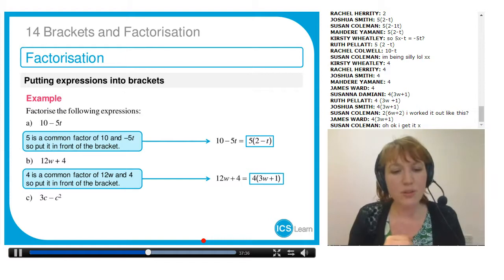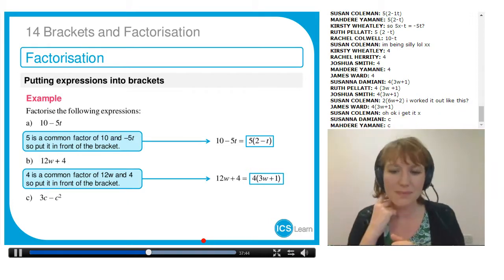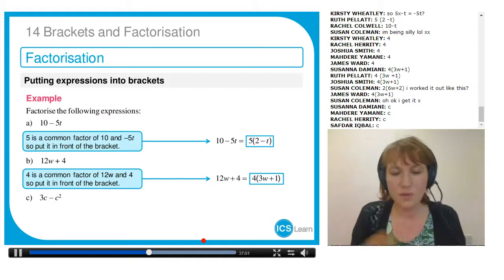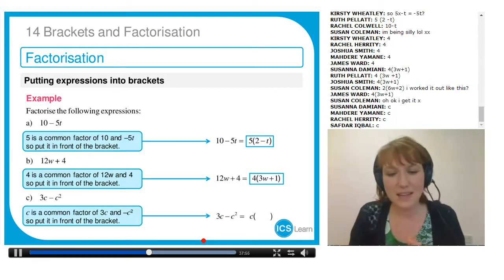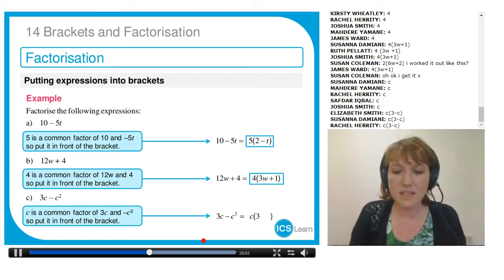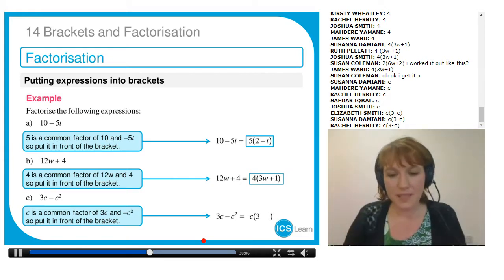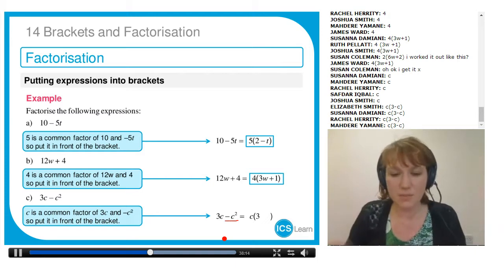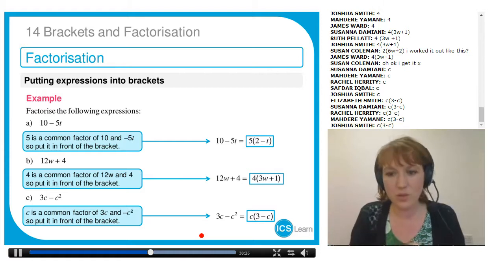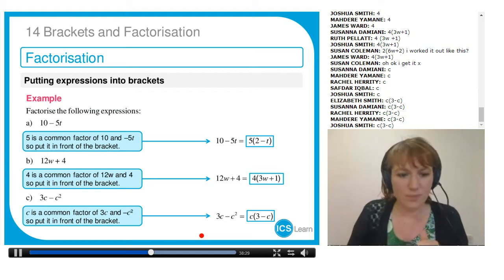And then we've got part C. We've got 3c take away c squared. What is the highest common factor? What is the term that I'm going to put in front of the bracket? C, yes, everyone's writing C. There isn't a number that is common to these two, but there is a letter. So we're going to put C in front of the bracket. And then it just works in exactly the same way. What do I need to multiply C by to get 3c? I multiply it by 3. And then what do I need to multiply C by to get minus c squared? Remember that c squared is C times C, plus I need a minus because it's got a minus sign in front of it. So C times minus C is minus c squared. That's what goes into my bracket. If you want to check it, you can multiply the bracket, but you should get back to what you started with.